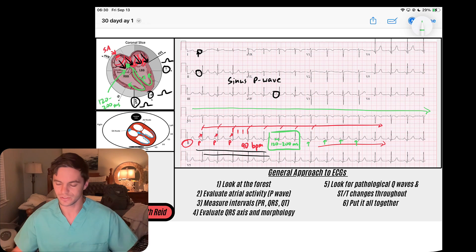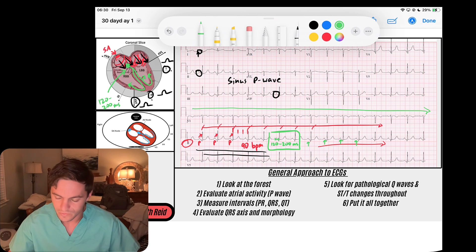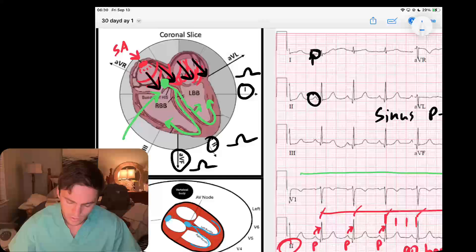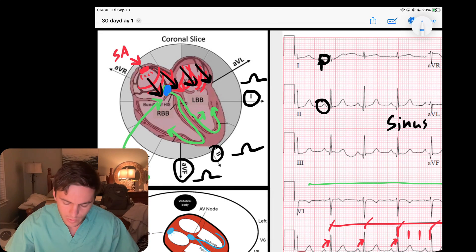That's my AV node function. We next know that the AV node is going to send that signal down to the ventricles, so we really need to evaluate ventricular depolarization. The first thing I look for is the width of the QRS.